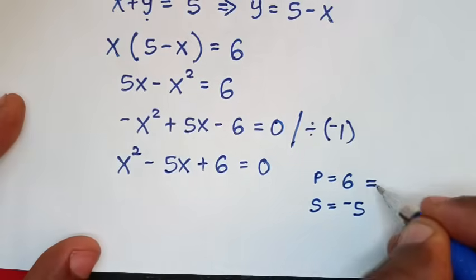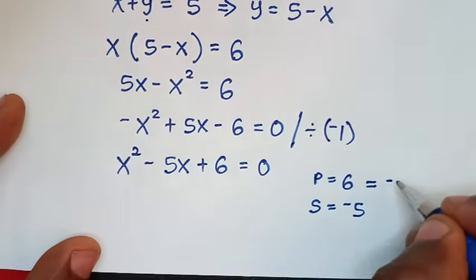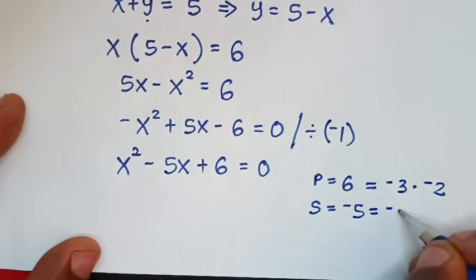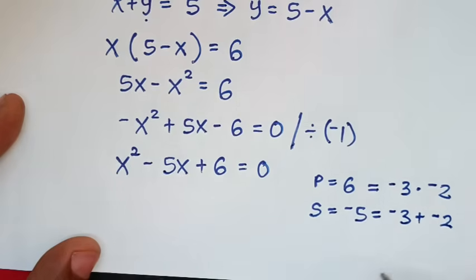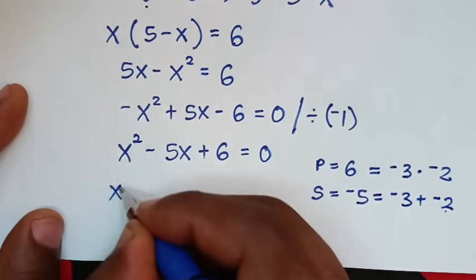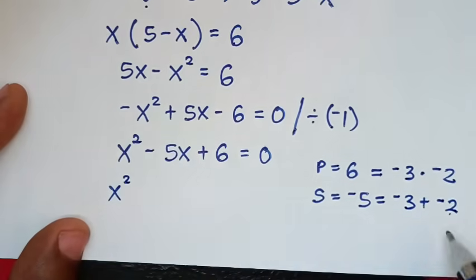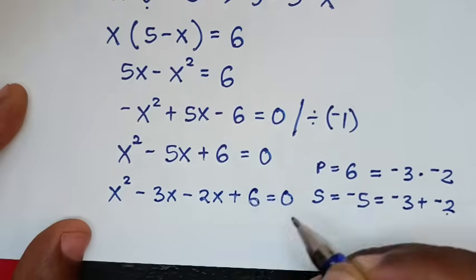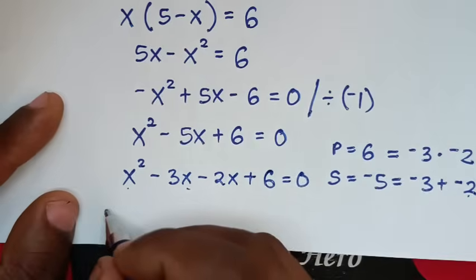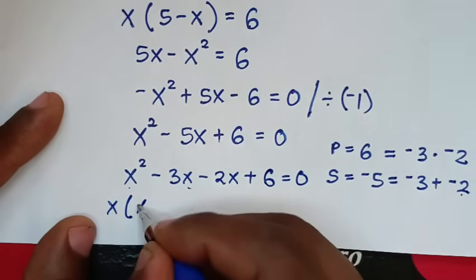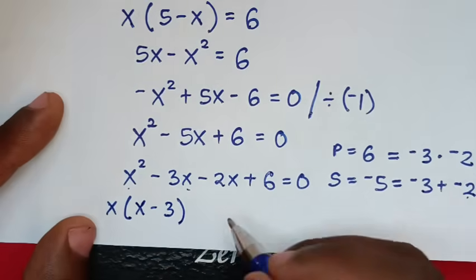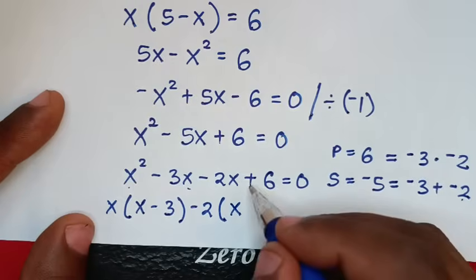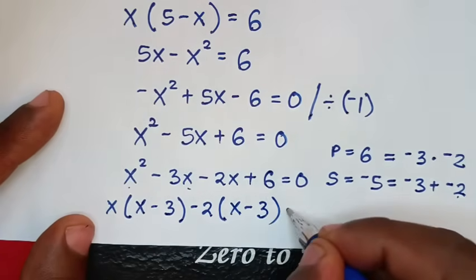6 is the product — we find the two factors. 6 is the product of negative 3 times negative 2 is 6, and negative 5 is the sum of negative 3 plus negative 2 is negative 5. So we use these two factors. It will be x squared minus 5x, using minus 3x minus 2x plus 6 is equal to 0. Into here x is common, so we take x out: x squared divided by x is x, negative 3x divided by x is negative 3, bracket. Here we take negative 2 outside the bracket: negative 2x divided by negative 2 is x, 6 divided by negative 2 is negative 3, bracket, is equal to 0.